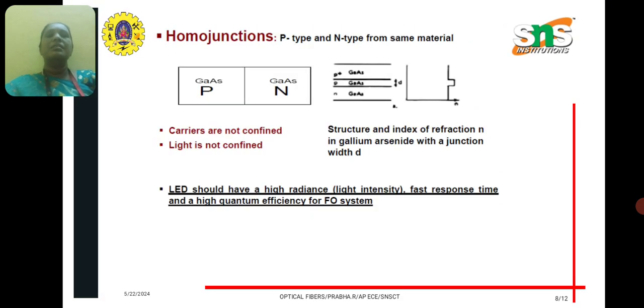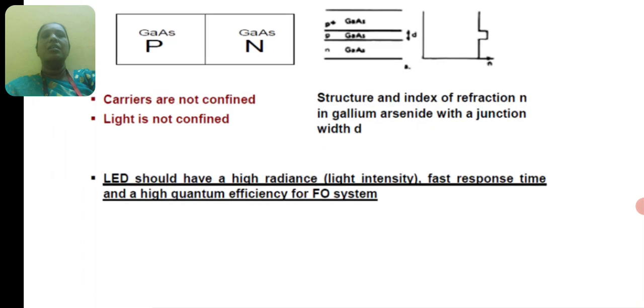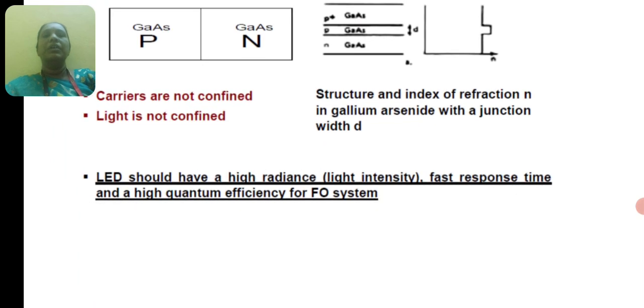Next is the homojunctions. Here, the P-type and N-type are from the same material, and it is called homojunction LED. The carriers are not confined when it is homojunction, when P-type and N-type are of the same material.